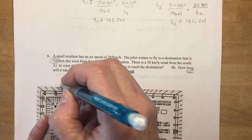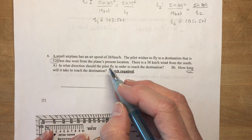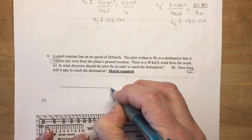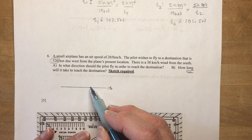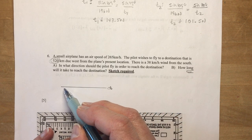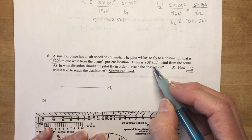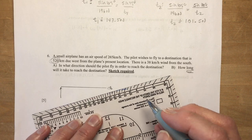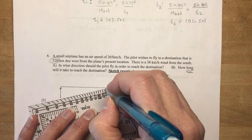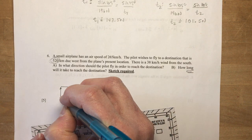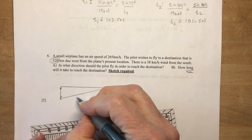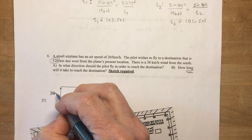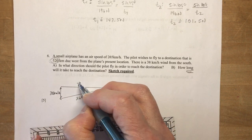So we want to go 265 kilometers, 520 kilometers due west from the plane. Okay, so we'll put a plane here, something like that. And he wants to go this way, but he has a 38 kilometer wind from the south. So that's blowing north. And he's going to have to go this way, which is his velocity of 265 kilometers per hour.